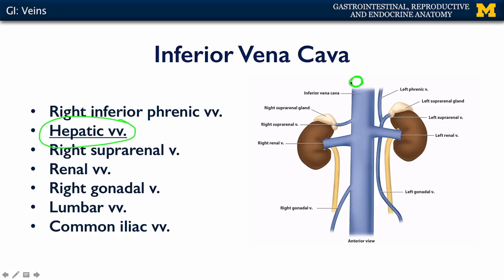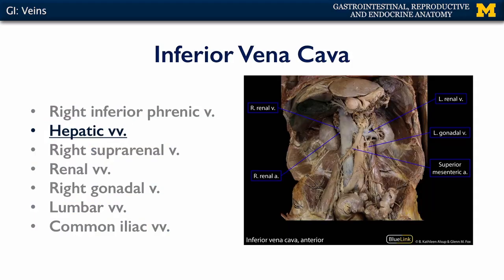Let's take a look at the cadaveric view of the inferior vena cava to confirm that there are no visceral venous tributaries from the gut tube. As we look along the surface of the inferior vena cava, we do not see corresponding celiac, SMA, or IMA branches.